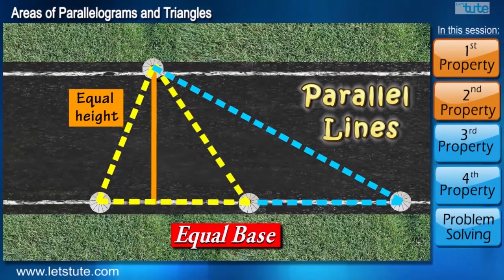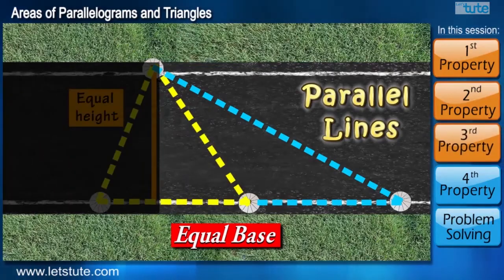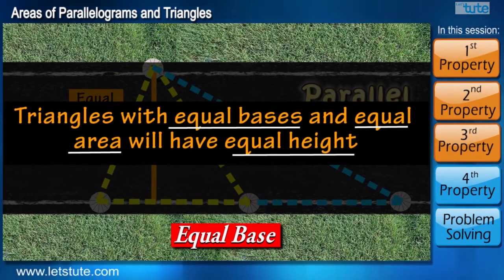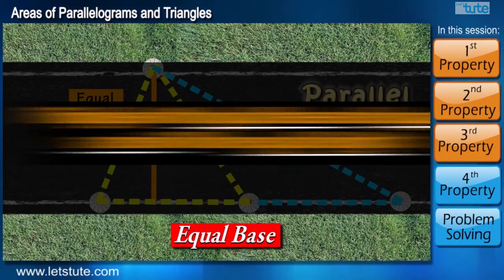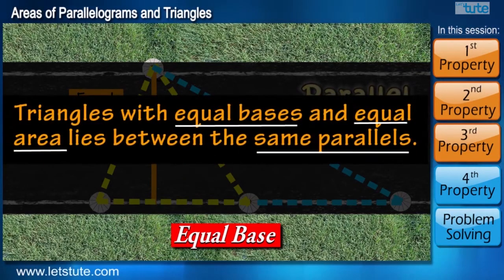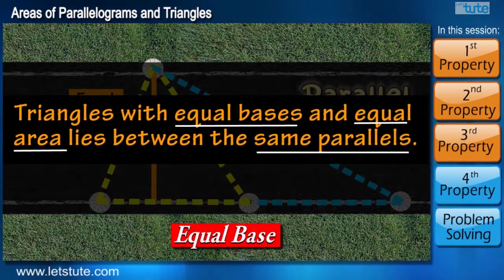The height of both the triangles will be same. So what does this imply? It says that triangles with equal bases and equal area will have equal height. Or we can say that they lie between the same parallel lines.